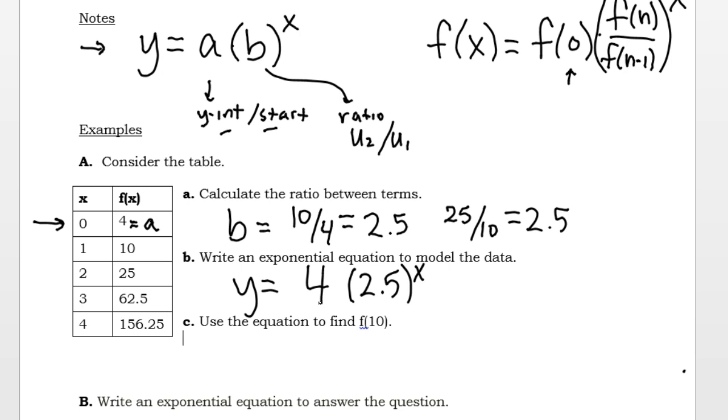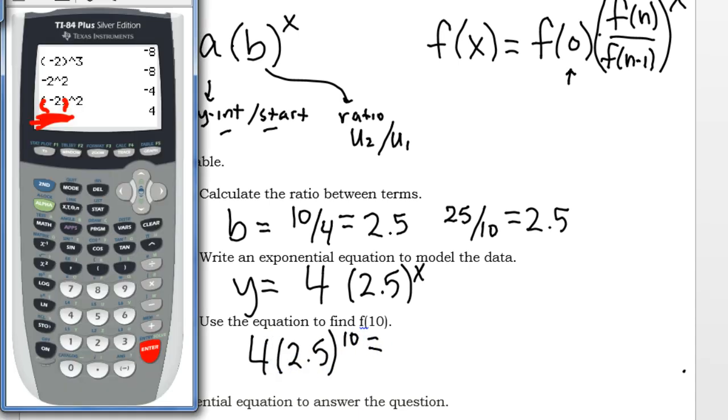And if I wanted to find the 10th value, f of 10, I can substitute the 10 in for x. So that would be 4 times 2.5 to the power of 10. And I have my handy calculator. That will be 4 times 2.5 to the power of 10, and I have 38,147.